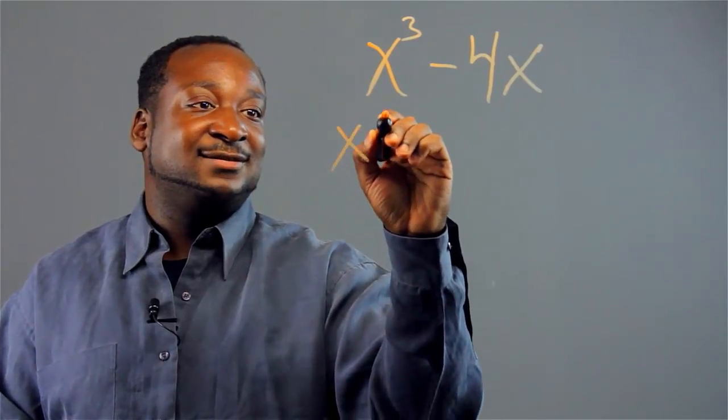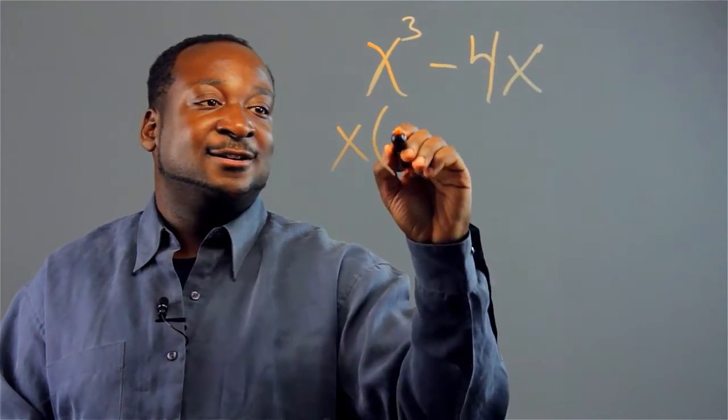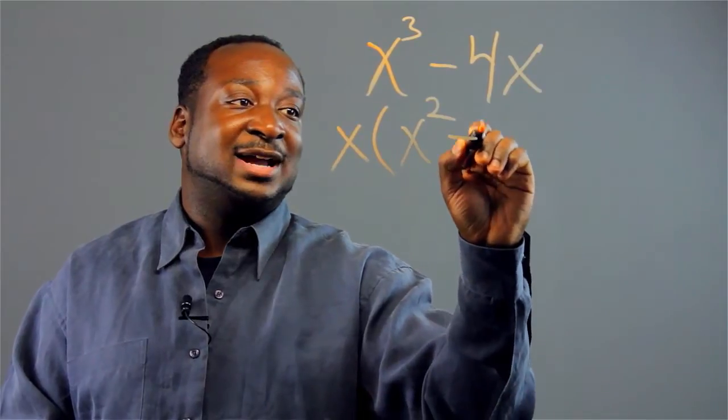So we take out a degree here, so you get x squared minus 4.